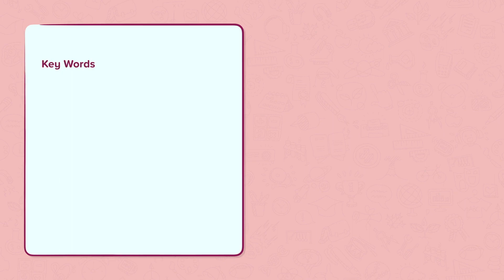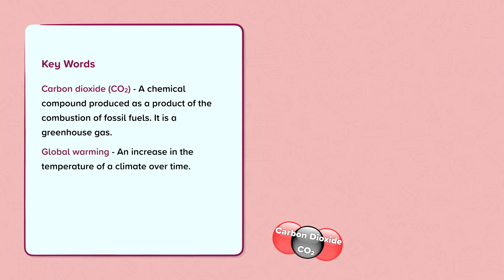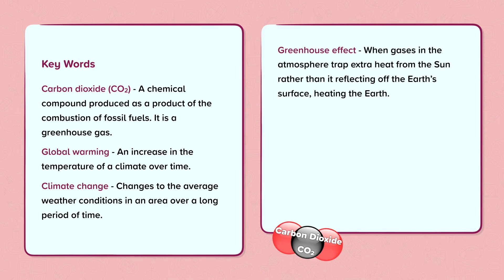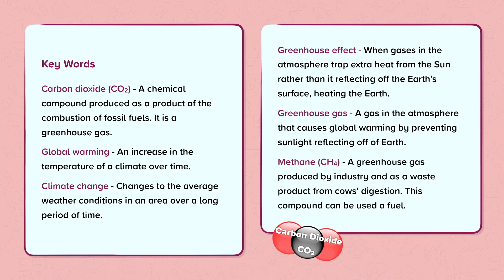Keywords: Carbon dioxide (CO2) — a chemical compound produced as a product of the combustion of fossil fuels; it is a greenhouse gas. Global warming — an increase in the temperature of a climate over time. Climate change — changes to the average weather conditions in an area over a long period of time. Greenhouse effect — when gases in the atmosphere trap extra heat from the Sun rather than its reflection off of Earth's surface heating the Earth. Greenhouse gas — a gas in the atmosphere that causes global warming by preventing sunlight reflecting off of Earth. Methane — a greenhouse gas produced by industry and as a waste product from cows' digestion; this compound can also be used as a fuel.